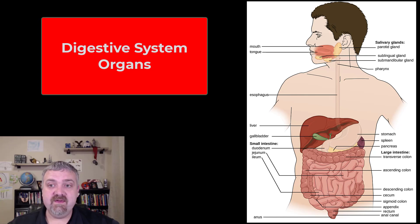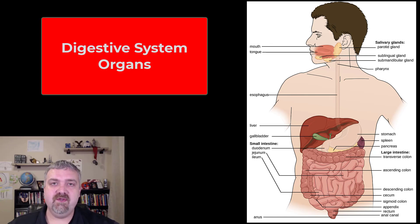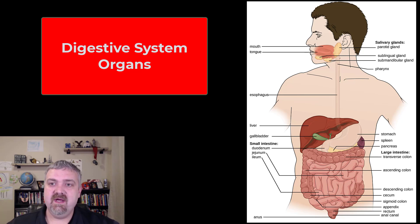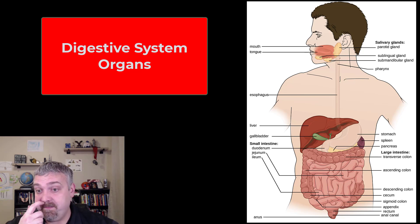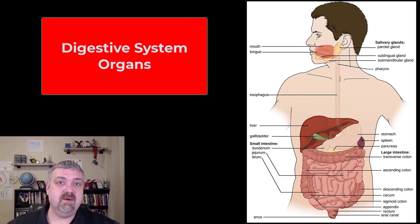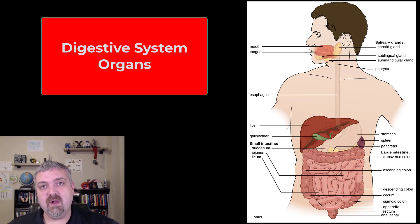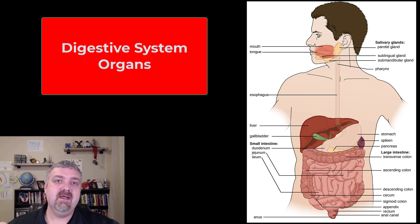Hey everybody, Dr. O. In this important video, we're going to do an overview of all of the organs of your digestive system. We're going to go deeper on each of these structures — each one is going to have its own video — but I want you to have one place where you can get a really big picture look at what each of them are doing. Here you see the gastrointestinal tract, and we'll start there with the GI tract from the mouth to the anus. As we go, we'll also talk about what are called the accessory organs or accessory structures of digestion.